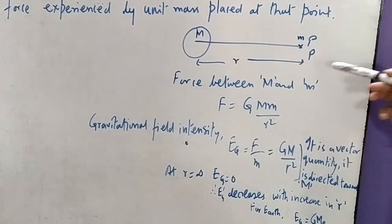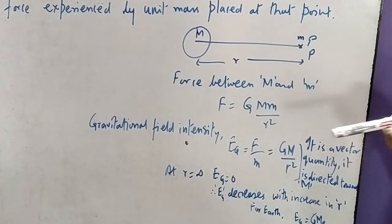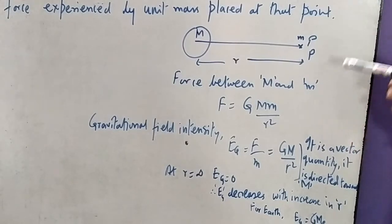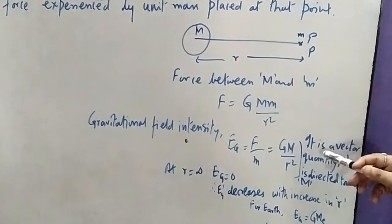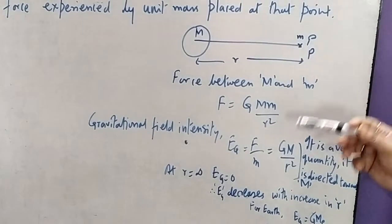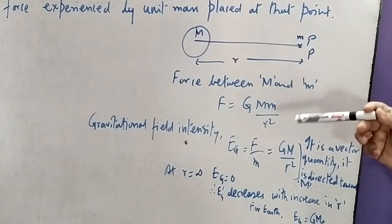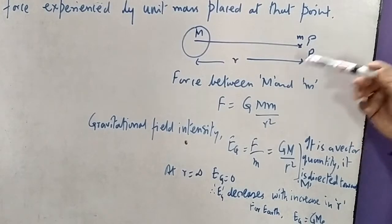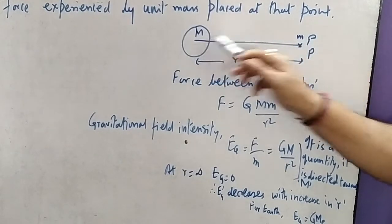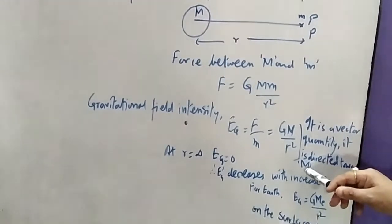The direction is towards the bigger mass, towards the given mass, at that point. That means it is always considered to be towards the body for which we are counting the gravitational field. It is directed towards that body only. The direction of gravitational field intensity is always directed towards the body for which we are counting the gravitational field intensity. So this direction will be from P towards M. It is a vector quantity directed towards M.